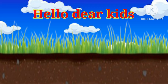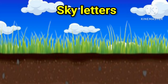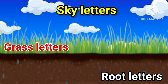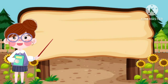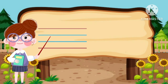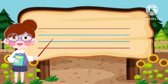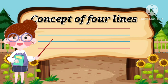Hello Dear Kids, today's topic is Sky Letters, Grass Letters and Root Letters. As we know there are four lines in the English language. Before starting this topic we will learn the concept of four lines.